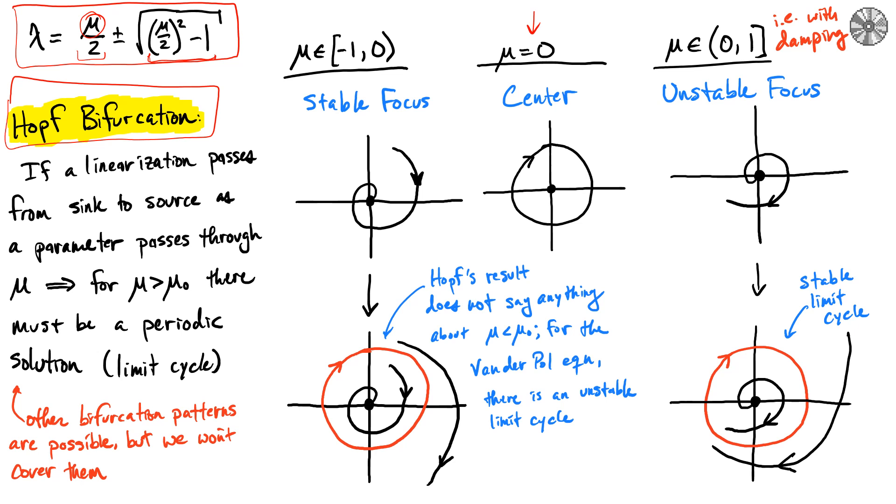If this linearization moves from something that is a sink—so a sink means that things are going into the origin, that's this stable focus—into a source, and it does that, it crosses that line as it crosses through the center, then what ends up happening is that you can show that there must be a periodic solution in the overall dynamics of the Van der Pol equation. In its phase portrait, there will be a periodic solution around the origin.